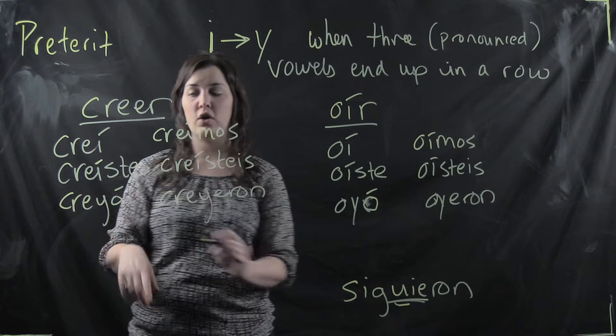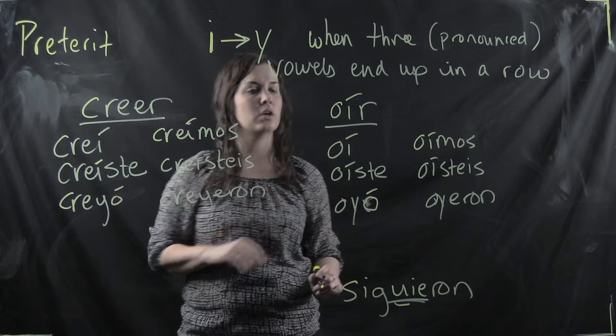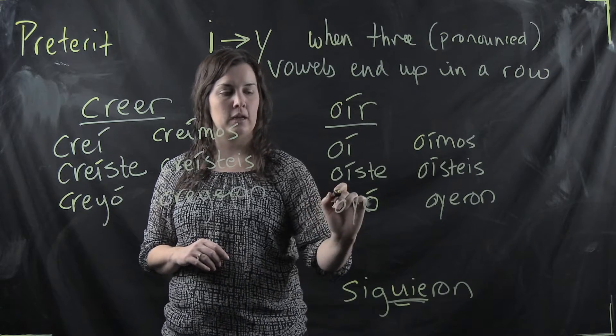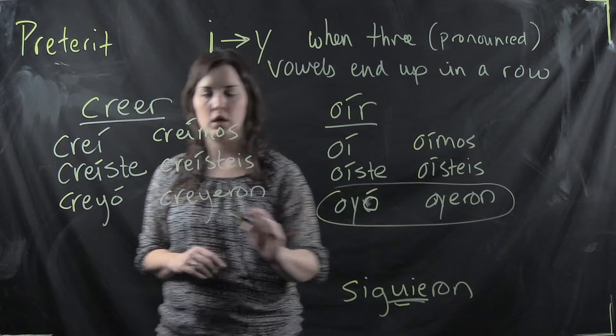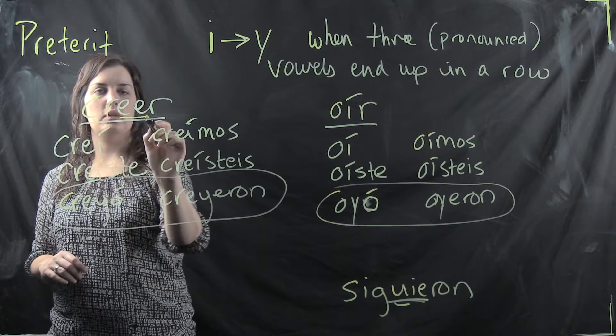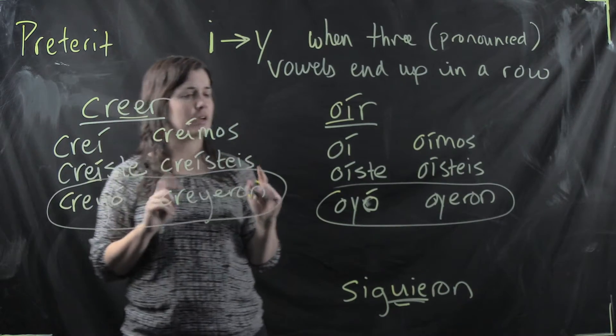Creí, creíste, creyó. That I changes to a Y. Creímos, creíste, creyeron. Oí, oíste, oyó, oímos, oíste, oyeron. It's happening only in the third person only in these ER or IR verbs with double vowel infinitives. Okay? Now let me point out one more thing here.